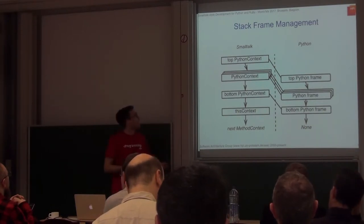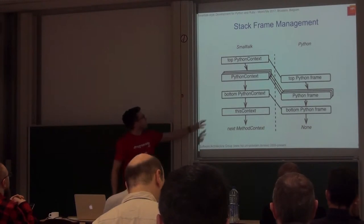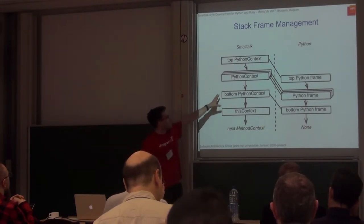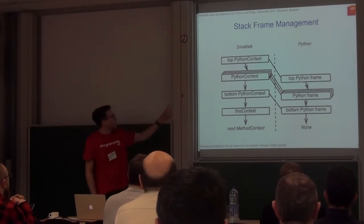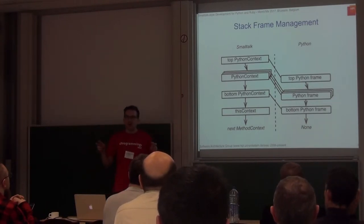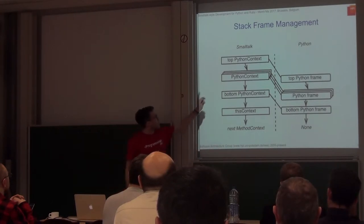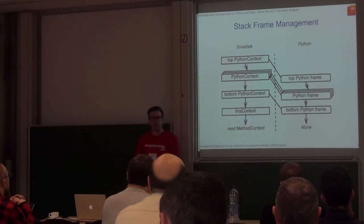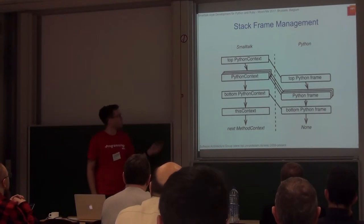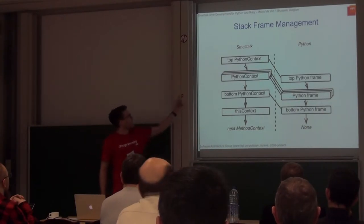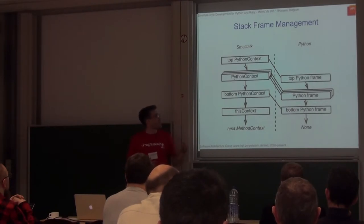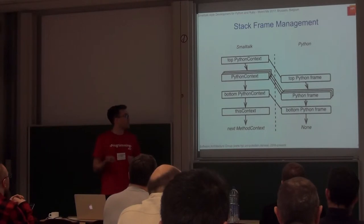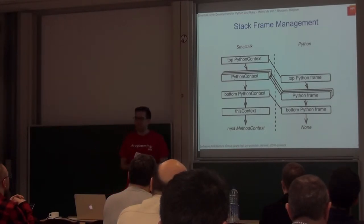In order to display all of this in the Smalltalk debugger, we have to come up with new stack frames. On the left we see what we actually do: in the Smalltalk world we have a Python context which is a fake method context in Smalltalk, and they all link to the corresponding Python frame. This way we can open the debugger and consult that Python context object, asking it about information stored in the real Python frame.